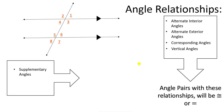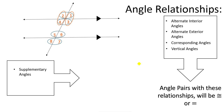Next, we are going to review supplementary angles. We have several supplementary angle pairs here: 1 and 2, 3 and 4, 5 and 6, 7 and 8, 2 and 4, 1 and 3, 6 and 7, and 5 and 8 are all supplementary pairs.